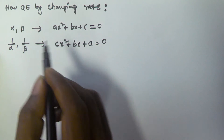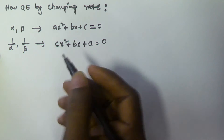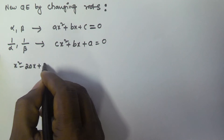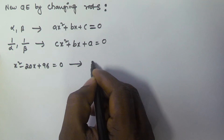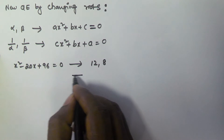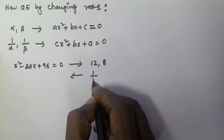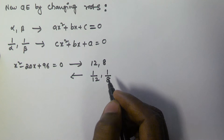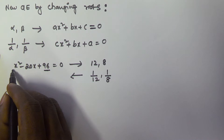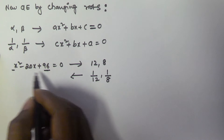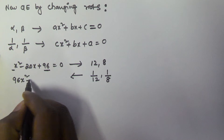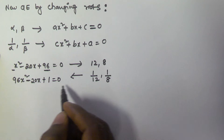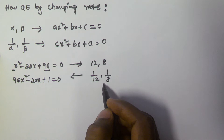For example, consider x² - 20x + 96 = 0, whose roots are 12 and 8. We have to find the quadratic equation whose roots are 1/12 and 1/8. We simply interchange the values of a and c. Here a = 1 and c = 96, so the new equation is 96x² - 20x + 1 = 0, and the roots of this equation are 1/12 and 1/8.